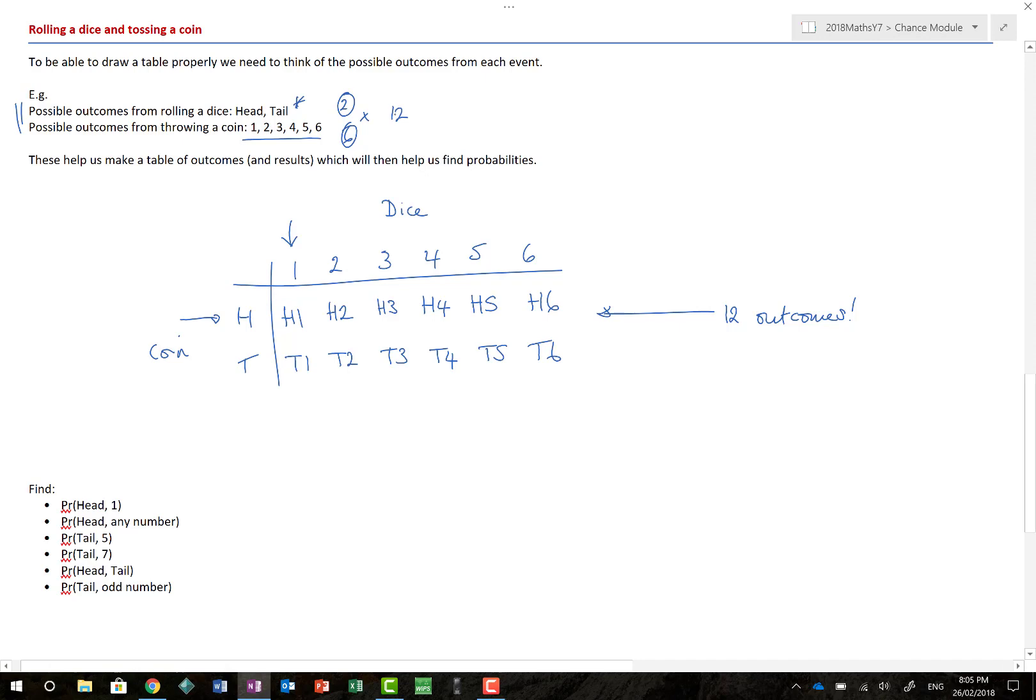Now, people always ask me, why do we put the dice on the top and the coin down the side? And I always say, actually, it doesn't matter. You can do them in any order you like. You could have had the coin along the top and the dice down the side, right? It doesn't actually matter. I just think the table looks better this way. And then people say, well, does that mean a tail followed by a three? And I say, nope. It just means that I've got a tail and a three. Whether we get the three first followed by the tail, or we have the tail first followed by the three, order isn't actually important.